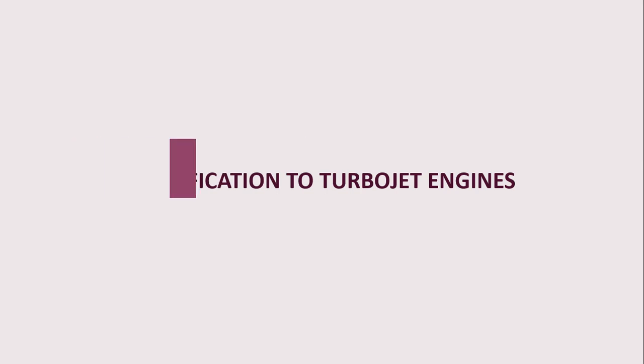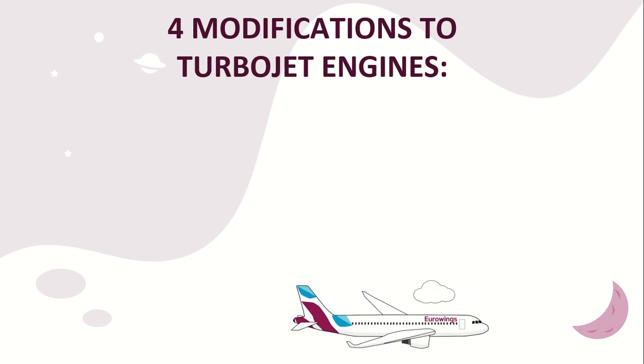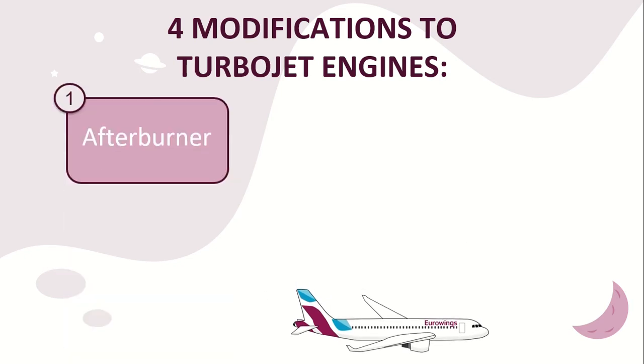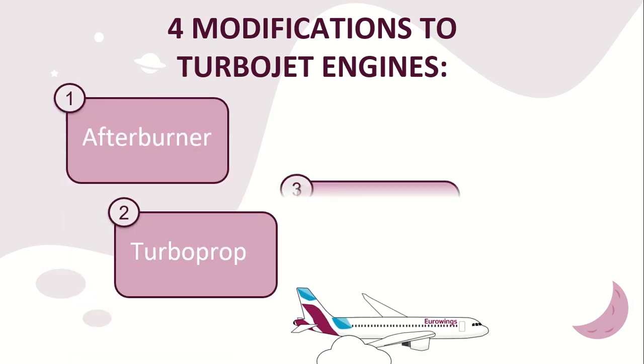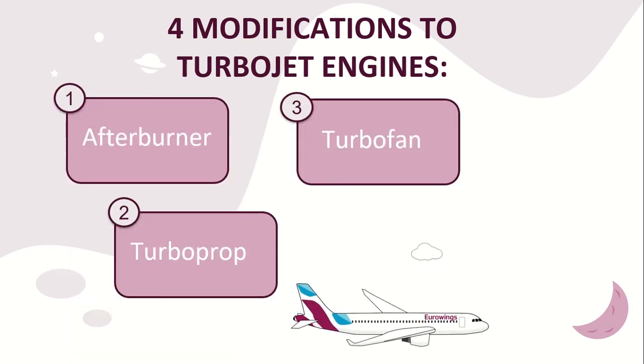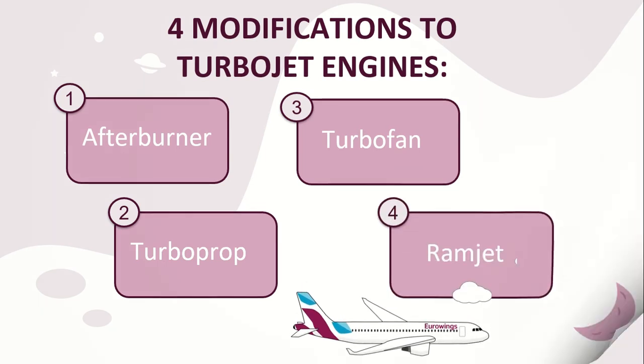Modifications to the turbojet engine. The turbojet engine has four modifications: afterburner, turboprop, turbofan, and ramjet.